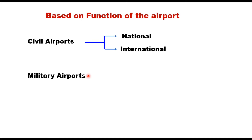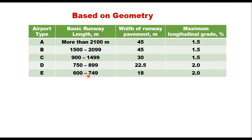Based on geometry, in order to have uniform runway design across different countries, FAA has classified airports into five categories: Type A, B, C, D, and E. These are based on basic runway length, width of runway, and maximum longitudinal gradient permissible. When the runway length is more than 2100 meters, pavement width is 45 meters, and maximum gradient is 1.5 percent, it is Class A. Similarly, different specifications apply for each class down to Class E.